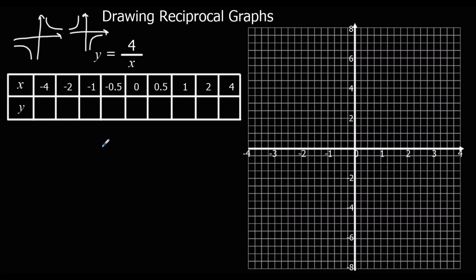If we're using the calculator, we can just substitute in for x as usual. So for y = 4/x, substitute the number in and the calculator will tell you the values to fill out the grid.